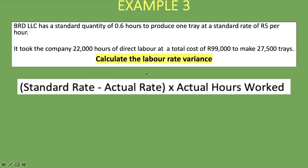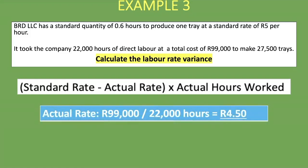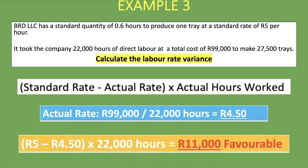This time the actual rate isn't given directly — only the total cost. The actual rate must be calculated: 99,000 ÷ 22,000 hours = 4 rand 50 per hour. Applying the formula: (5.00 − 4.50) × 22,000 = 11,000 rand favorable.